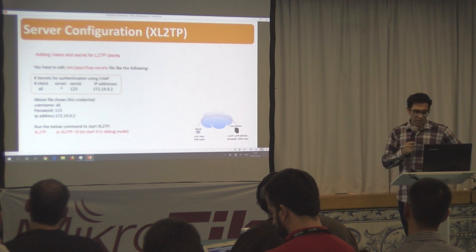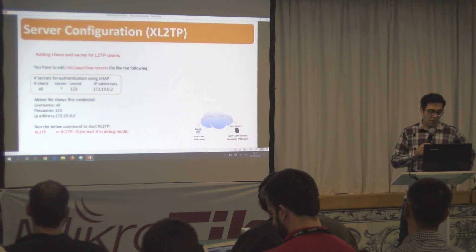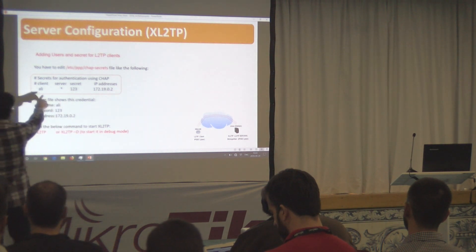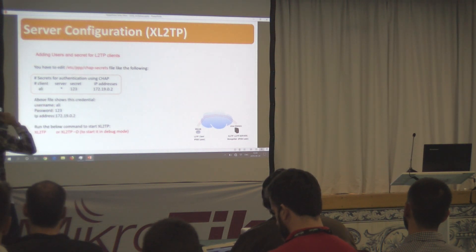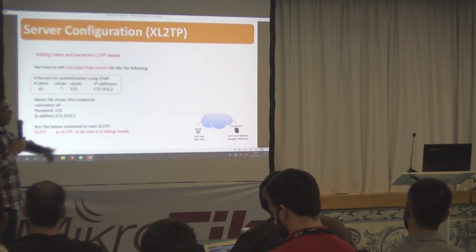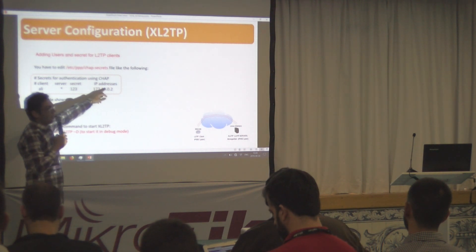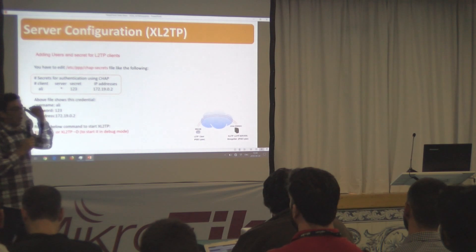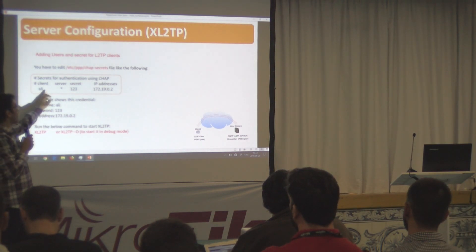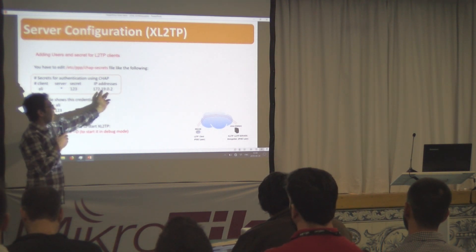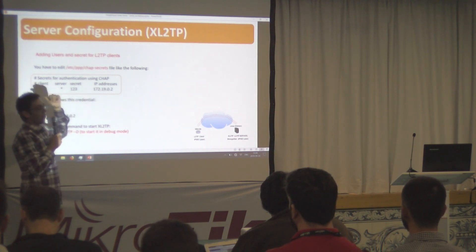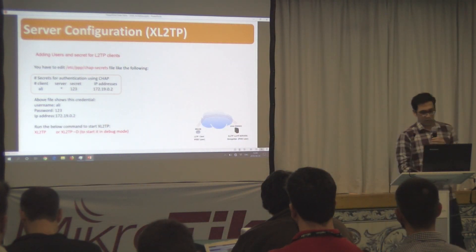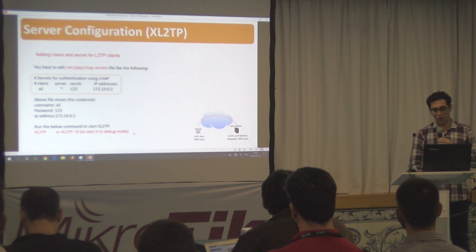This is the authentication file. In this file we determine users and passwords. The client field holds the username; the server field has a star meaning any server; then the secret (password); and finally the IP address to give to that user. If you write a star, one of the IP addresses from the IP range will be given to that client, but with a specific IP written here, just that address will be assigned. Using the command shown in red, you can start the L2TP server.